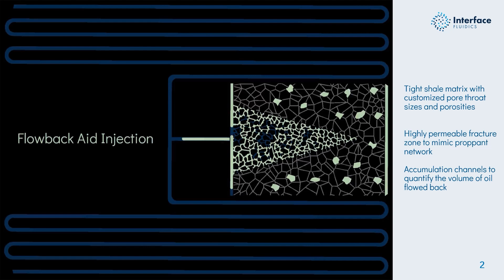The chip, or reservoir analog, contains three important components. The first is a tight shale matrix with customized pore throat sizes and porosities. The second is a highly permeable fracture zone to mimic the proppant network, and it's in the shape of a triangle to mimic a frac tip. The third is accumulation channels to quantify the volume of oil that's been flowed back.